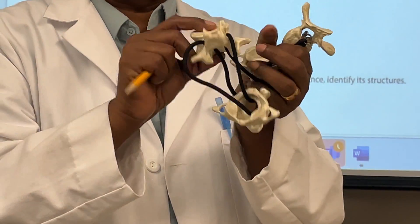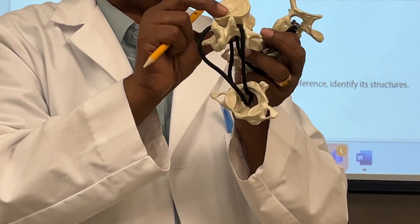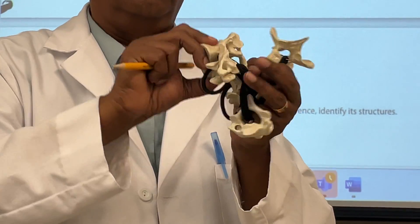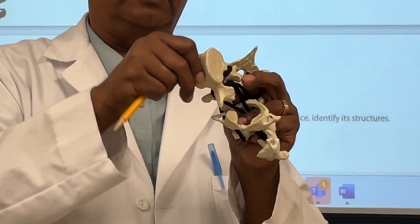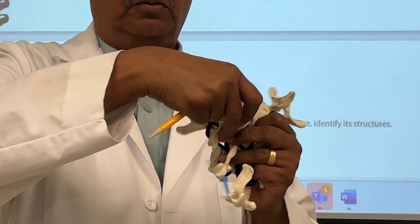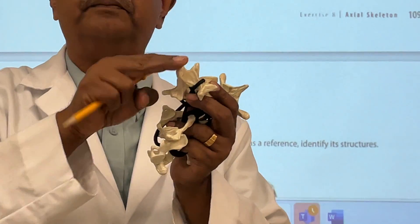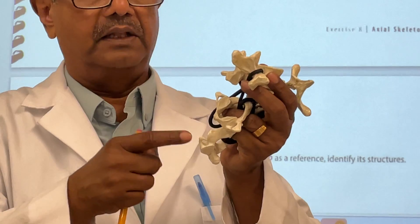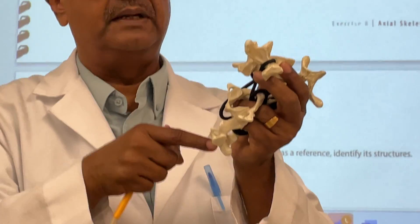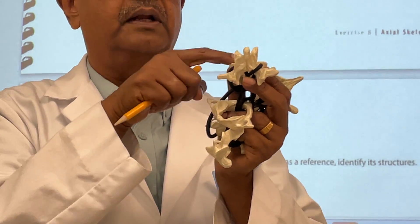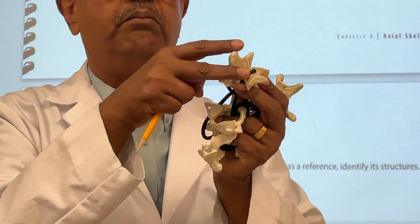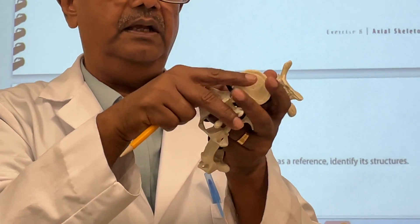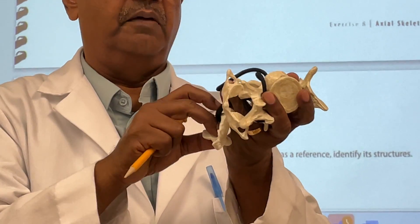The lumbar vertebrae also has a bigger body, but the spinous process is not going down like the thoracic — it's going back but it is blunt. So to summarize: the cervical is bifid, the thoracic spinous process goes down, and the lumbar spinous process goes back but is blunt. That is the difference between the three vertebrae.